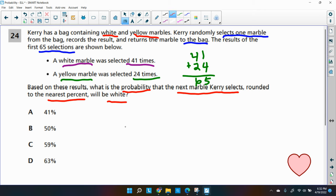So she wants a white marble. So let me write probability of white equals, well, how many white marbles did she get? It says she got 41 on the first 65 rolls. And then she got another 24, which gave us a total of 41 plus 64, which is our denominator of 65 rolls. Now, Dr. Rob, you got a fraction there.